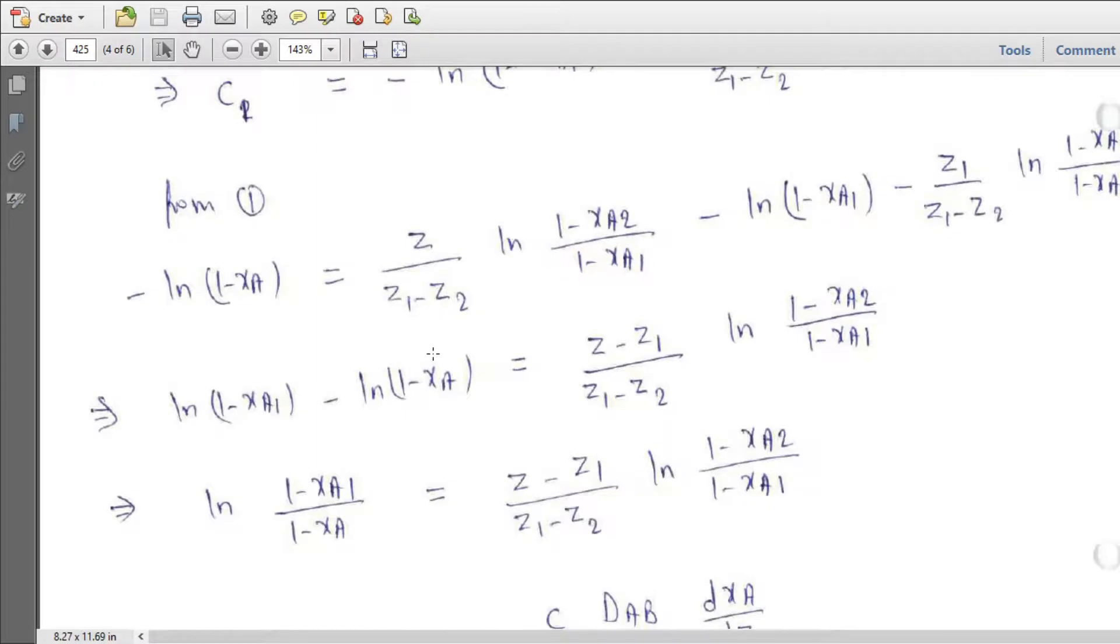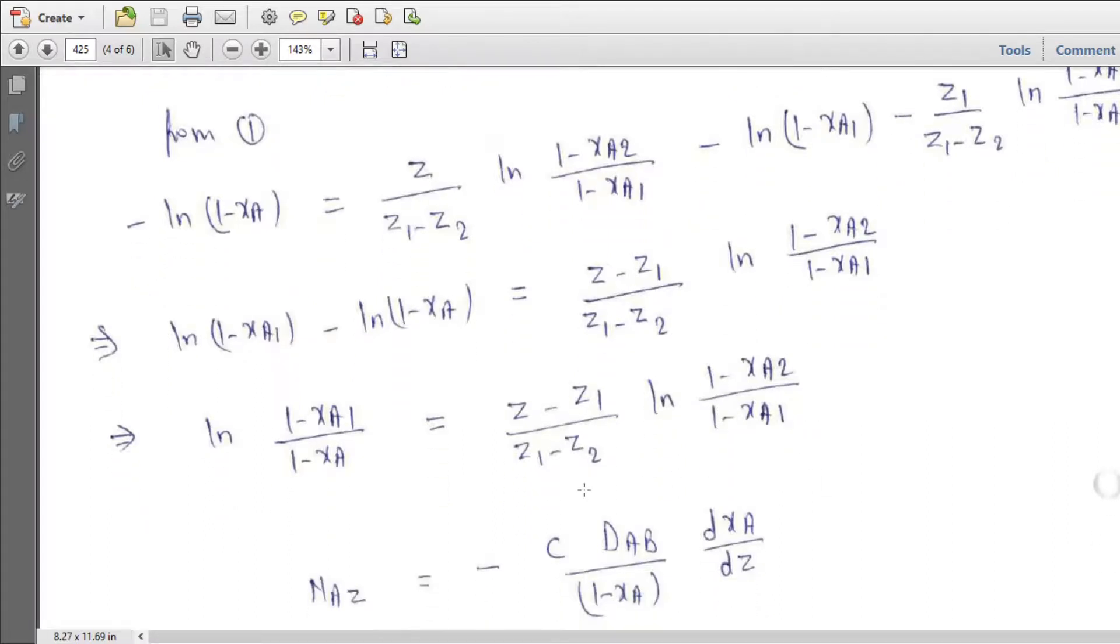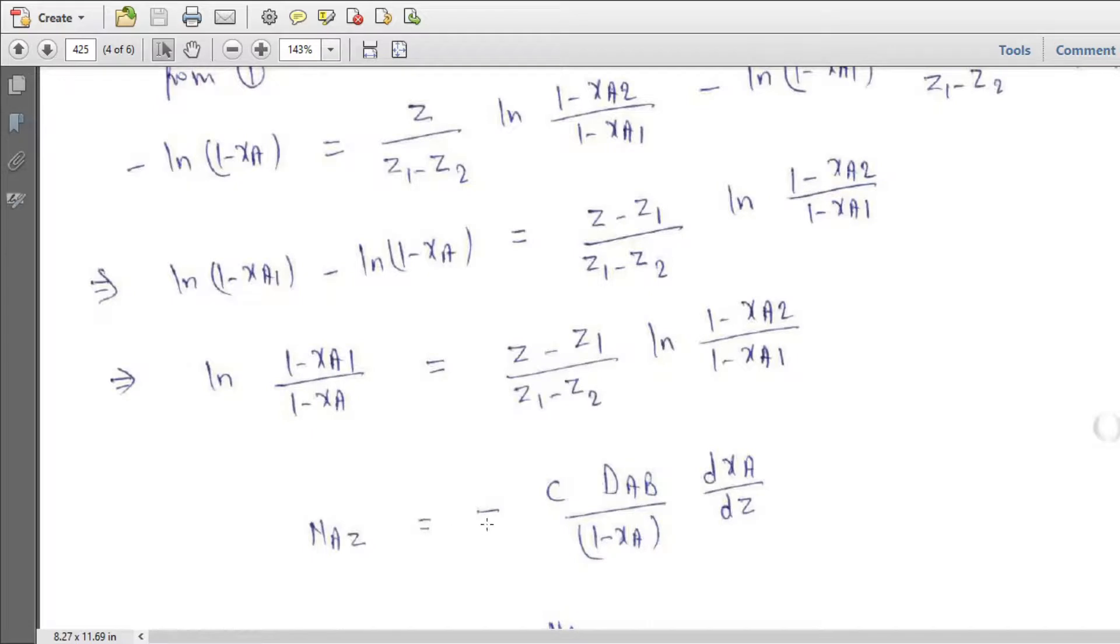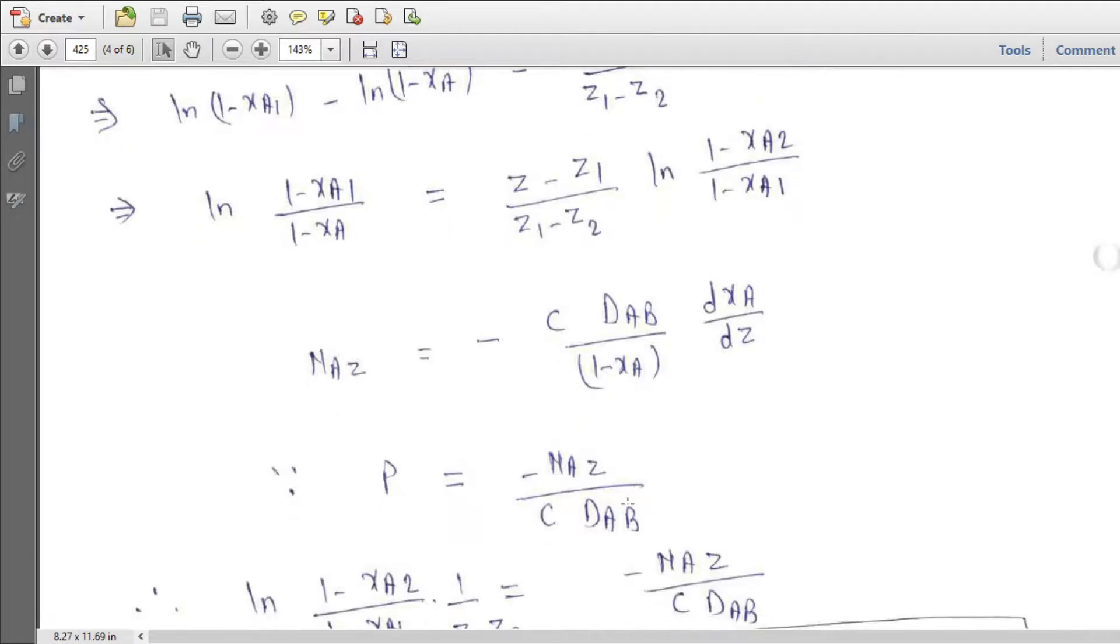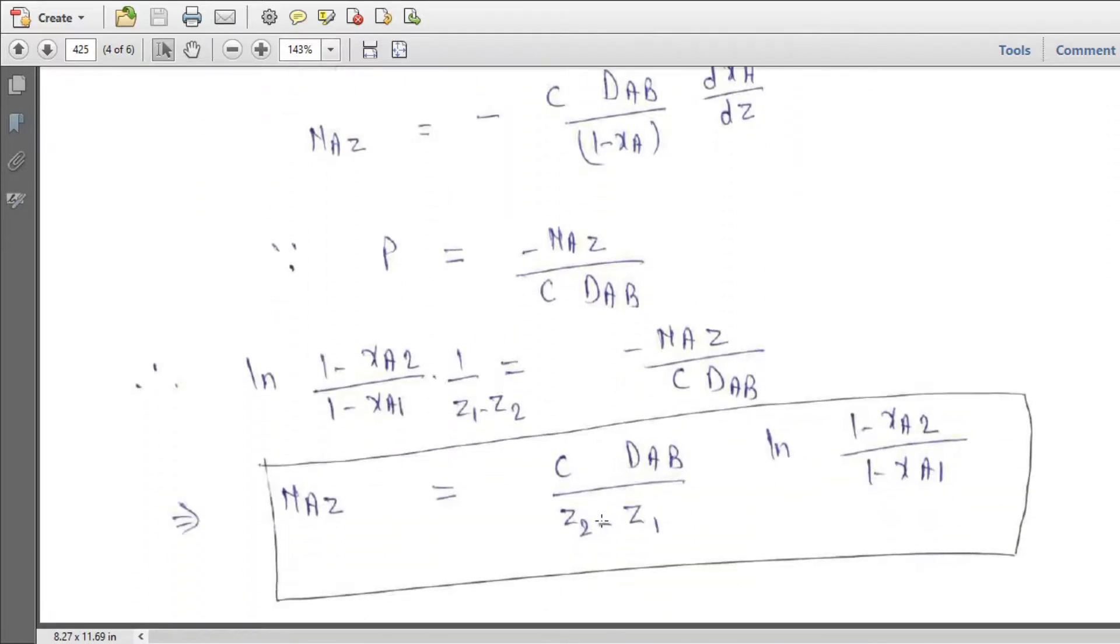So we can arrange that again. So we will get ln 1 minus XA1 upon 1 minus XA equal to Z minus Z1 upon Z1 minus Z2 times ln 1 minus XA2 upon 1 minus XA1. And NAZ equal to C DAB over Z2 minus Z1 times ln 1 minus XA2 upon 1 minus XA1. So this is how we can calculate the number of moles diffused actually.